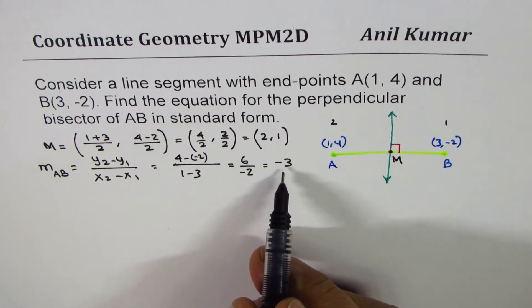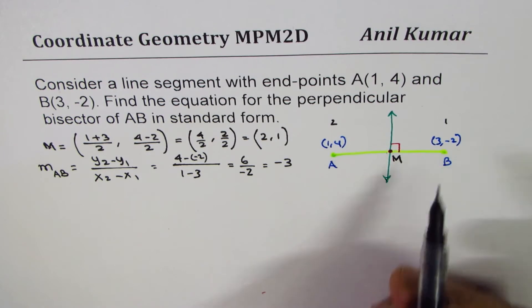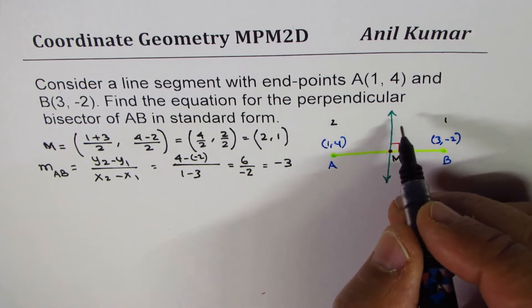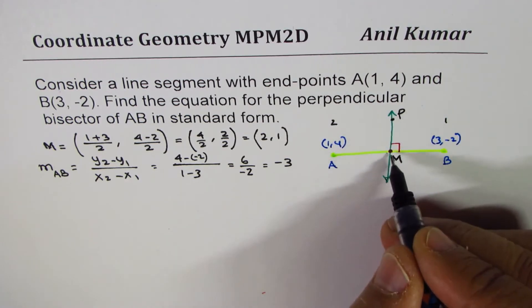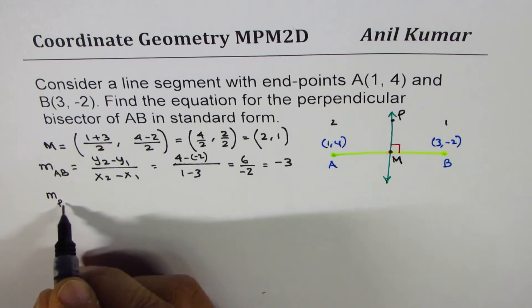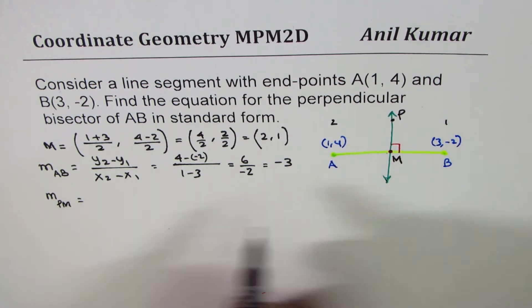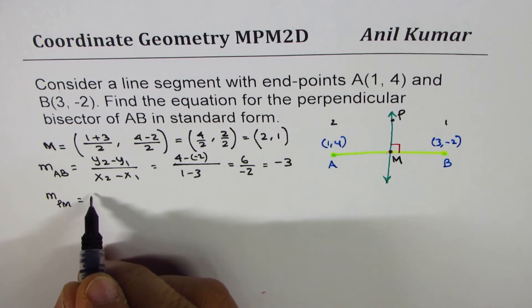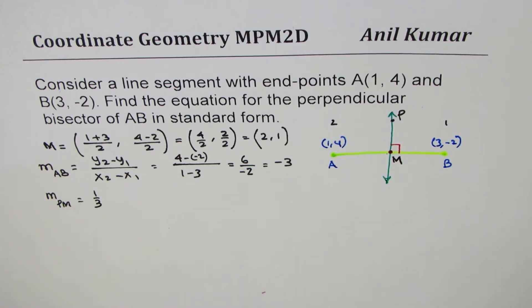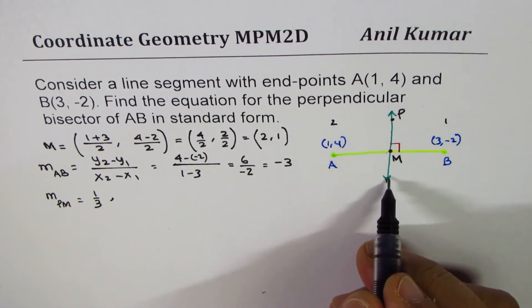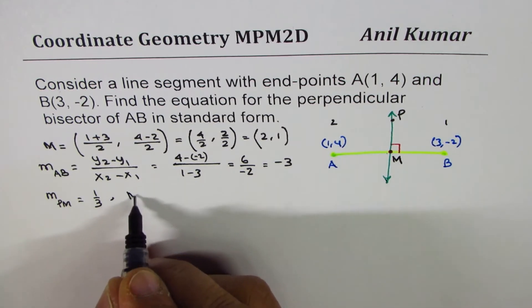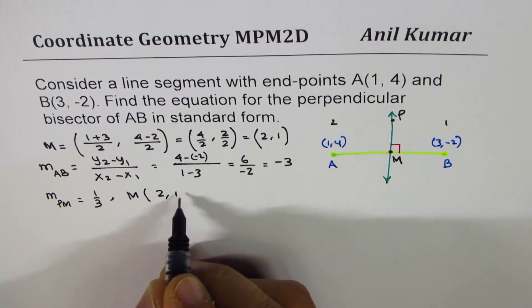Since minus 3 is the slope of AB, what is going to be the slope of perpendicular bisector? Let me call this as now PM. So, slope of PM should be equal to negative reciprocal. So, we do negative of negative 3 is positive. So it is 1 over 3. So, the slope becomes 1/3. And we also know that the midpoint will be on the perpendicular bisector. So, it has to go through the point M, whose coordinates are 2, 1.